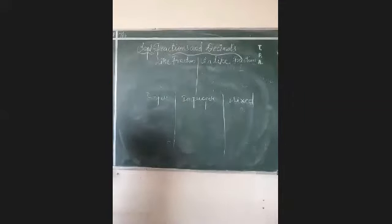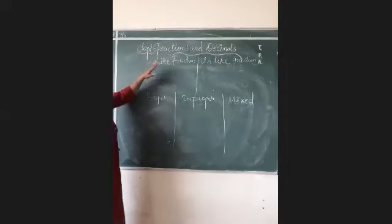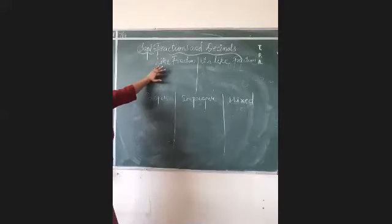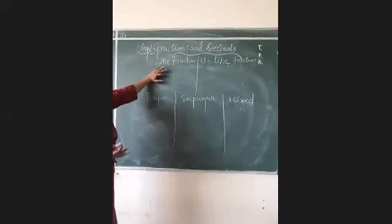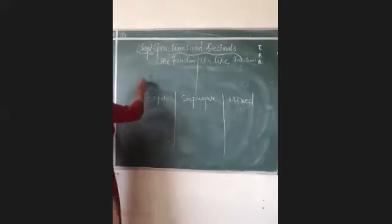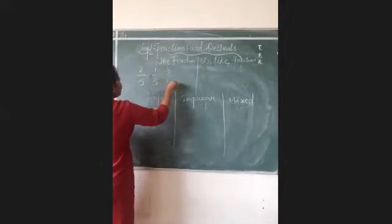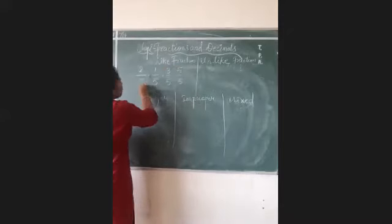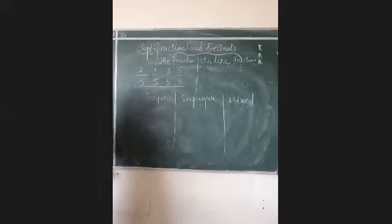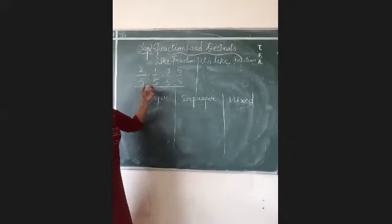So here these are the types of fraction I can call. One by one let us know about first like fractions. Like fraction means when you take one part of each whole, then you call it like fraction, or you can also call that the denominator is same in like fraction case. For example, 2 by 5, 1 by 5, 3 by 5, 5 by 5. So these all are like fractions, where denominator is same in all the cases. All parts are taken from the same whole.